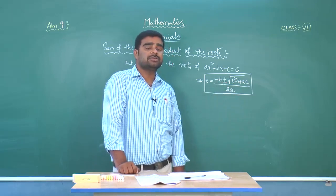Here alpha plus beta is nothing but the sum of the roots, and alpha into beta is the product of the roots. Let us now discuss some examples and questions based on these concepts. My first question is: find the sum and product of the roots of x squared plus 7x plus 1 equals 0.